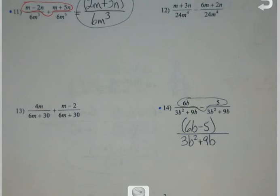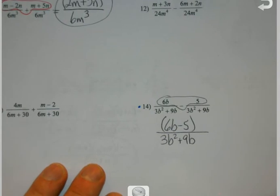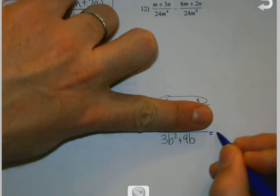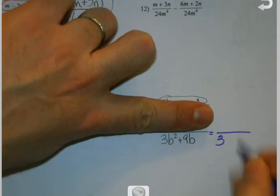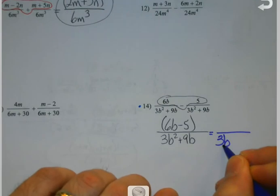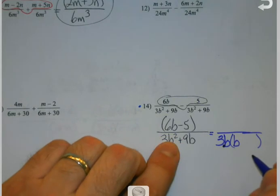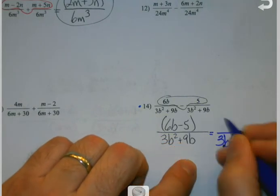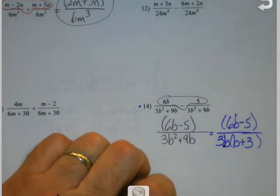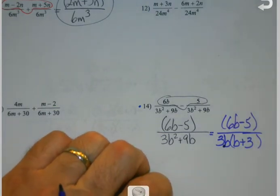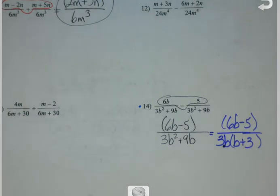Before I circle it — if anything is factorable once you get to the end, you should do it even though it may not get you anywhere, just to make sure. I look up top: 6 and 5, that doesn't do anything. But I look down below — they both have a 3 and a b. So once I get the 3 and the b out, I need another b there because b times b is b squared. If you don't do this factoring step, that will be the time it actually cancels.